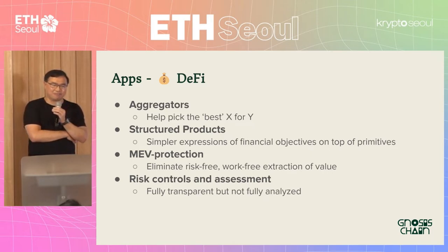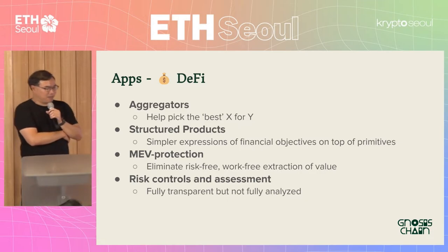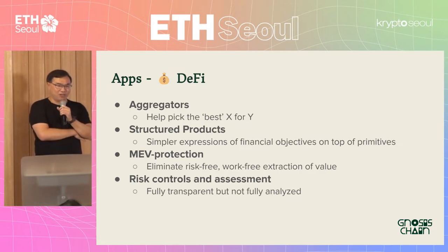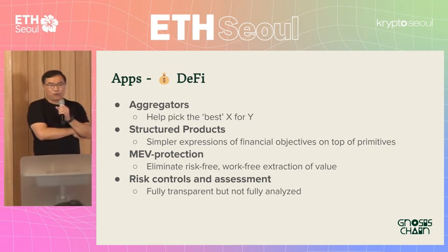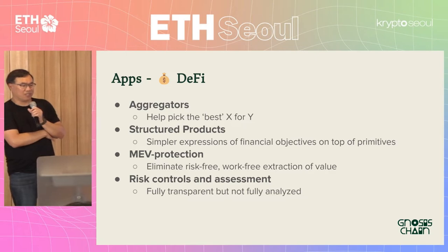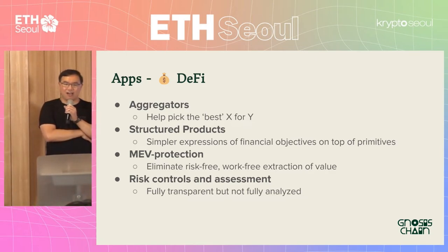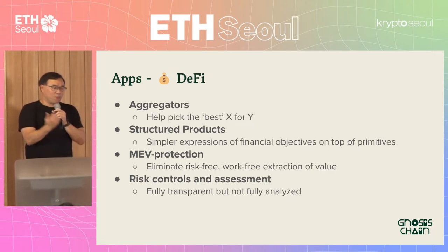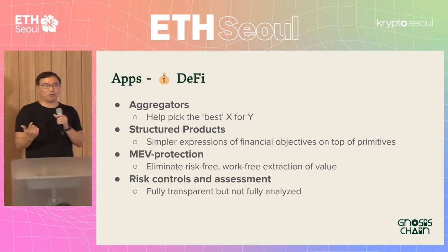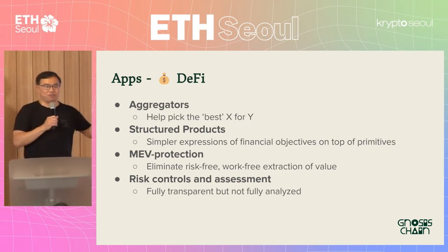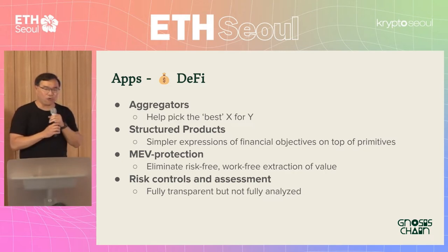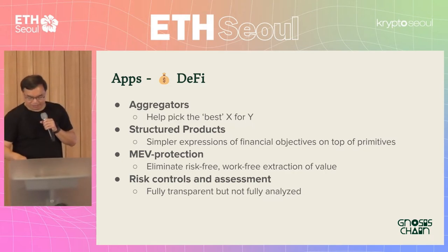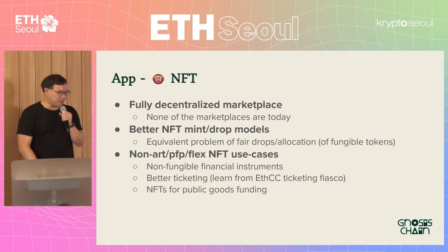Lastly in DeFi, you've seen multiple rug pulls. Because blockchains are fully transparent, risks should be known and fully analyzed at any point. You should be able to understand the risks of a particular financial instrument, but there aren't enough risk controls or risk scores and charts to inform people participating in DeFi what's going on. I think those things could be interesting to build at a hackathon.